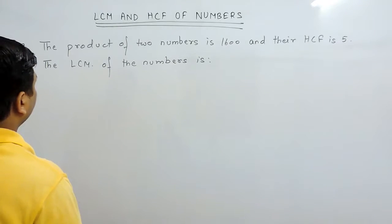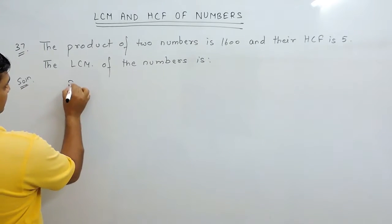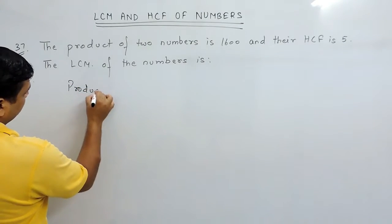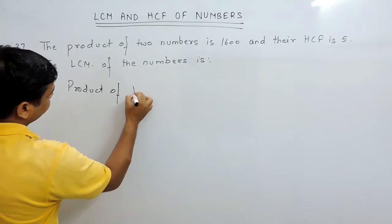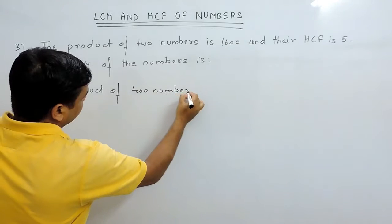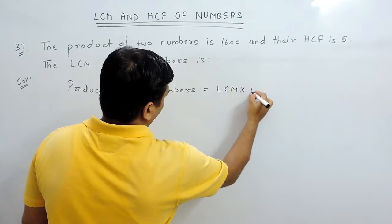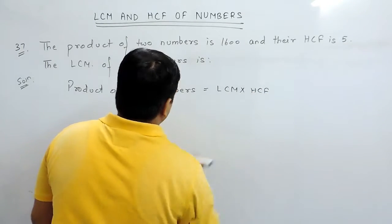Here we will find the LCM of the numbers by the formula. That is, product of two numbers equals product of LCM and HCF.